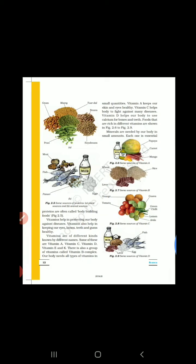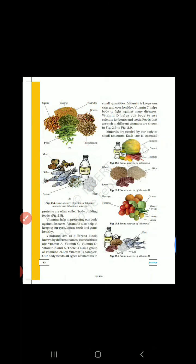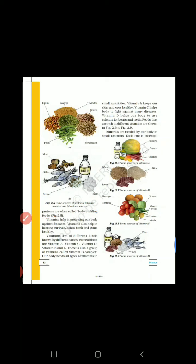Some sources of protein भी figure में दिए हैं। Plant sources of protein हैं: peas, gram, moong, toor dal, beans, soya beans। इसीलिए proteins को हम body-building food भी कहते हैं। अगर पूछा जाए which nutrients are often called body-building food, तो answer होगा proteins।